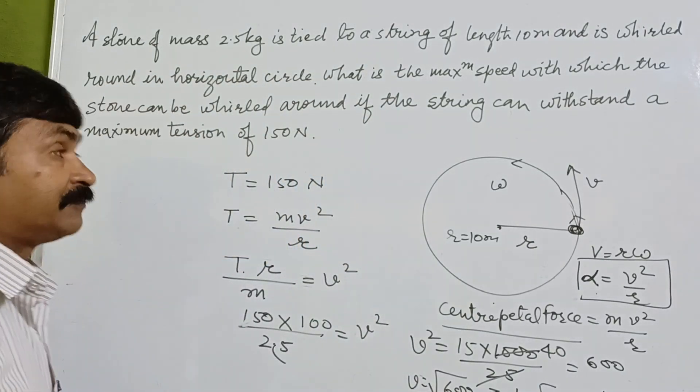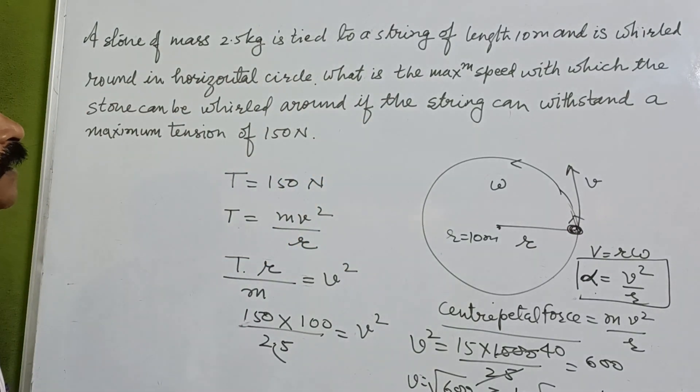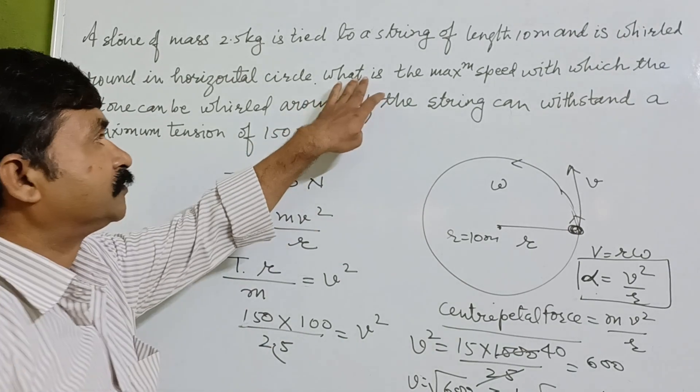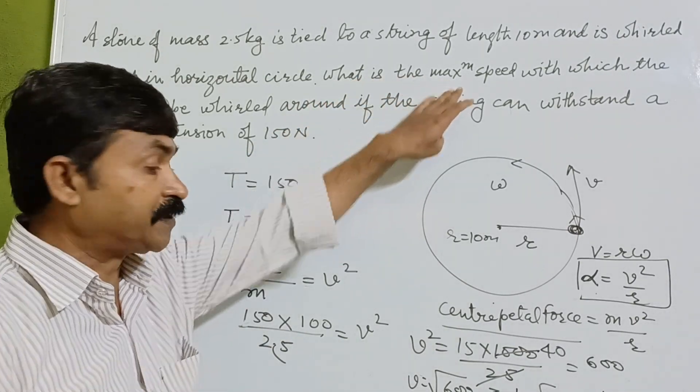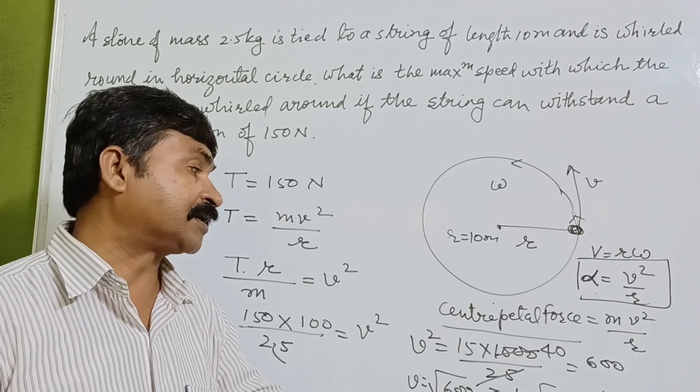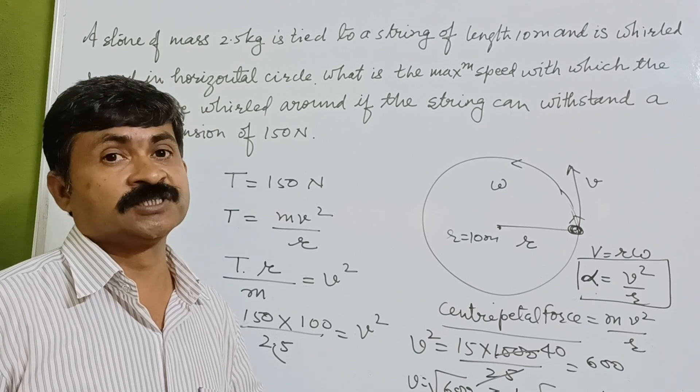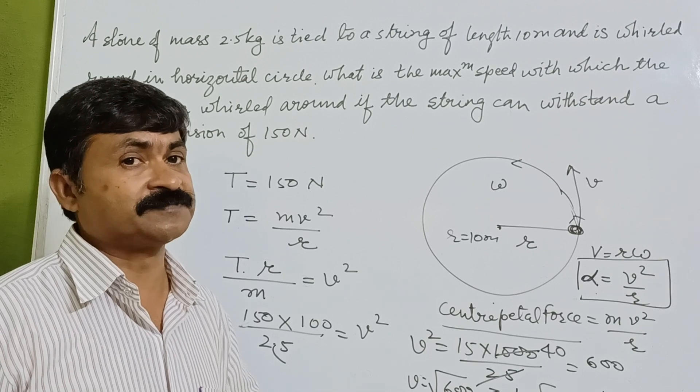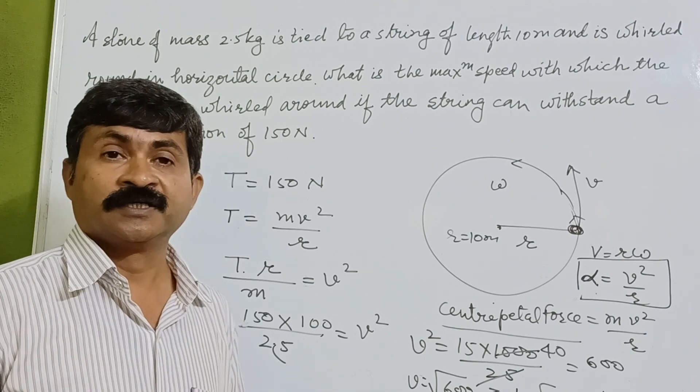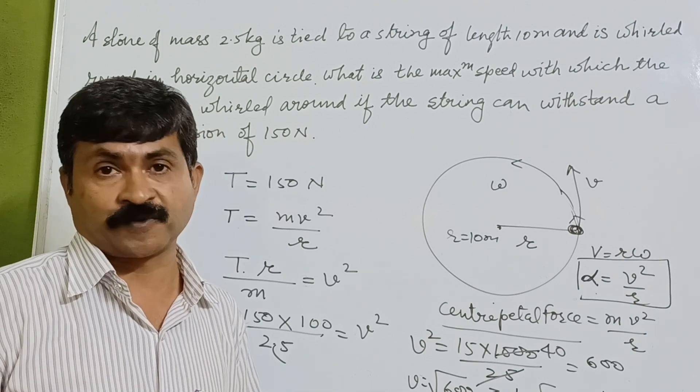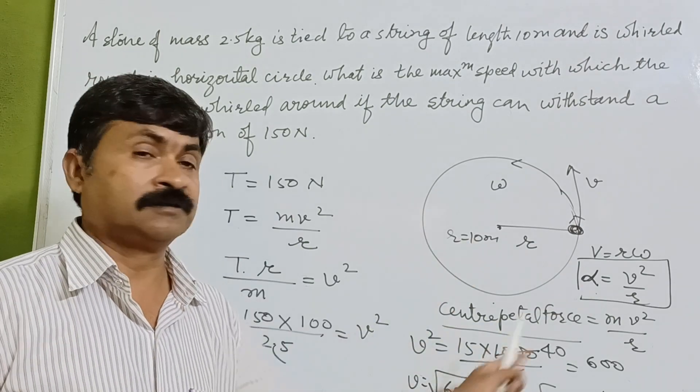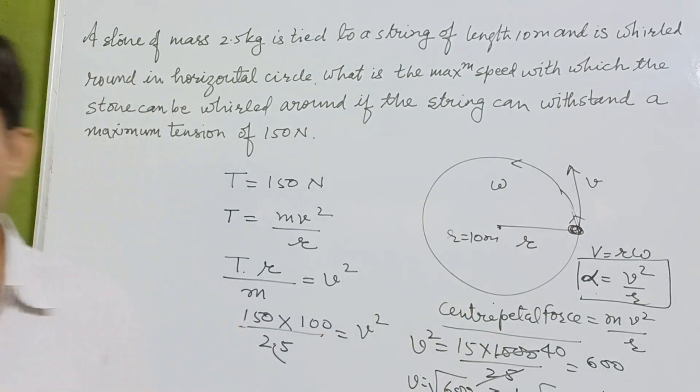So the velocity by which the particle, what is maximum speed that can be attained by it, is 10 root 6 meter per second. So this way we can solve the numerical which is based on the circular motion. Here, the centripetal force is responsible for the motion of this stone.